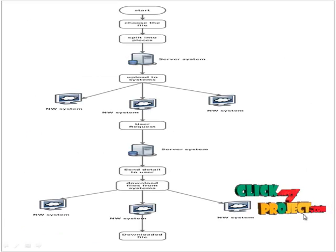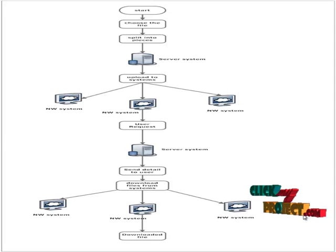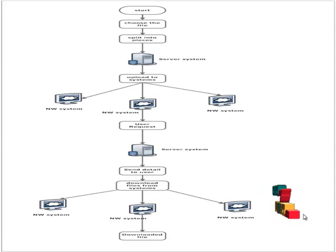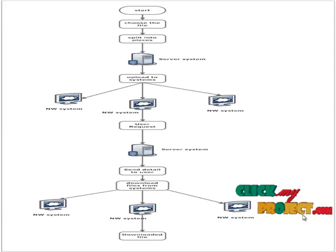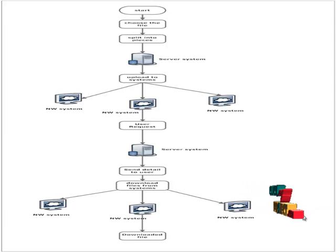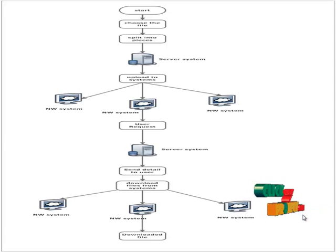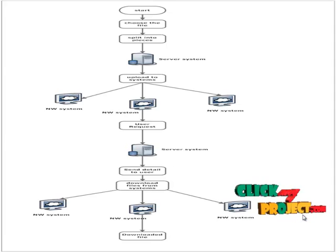Now let us see the data flow diagram of the project. First, the server system chooses a file to upload and splits it into pieces according to the number of peer systems available. Whenever a user wants to download a file, the user sends a request to the server, and the server responds with a list of available files.